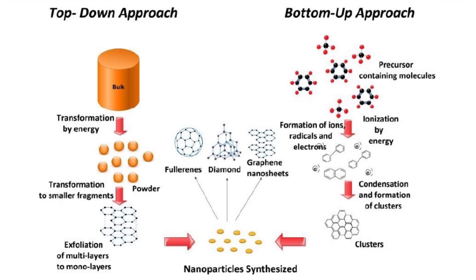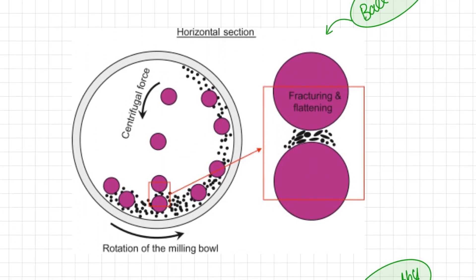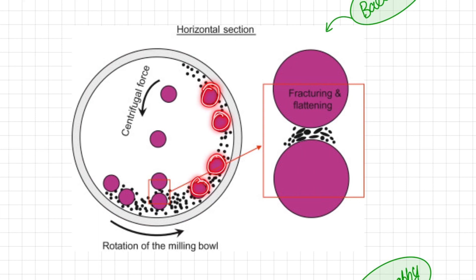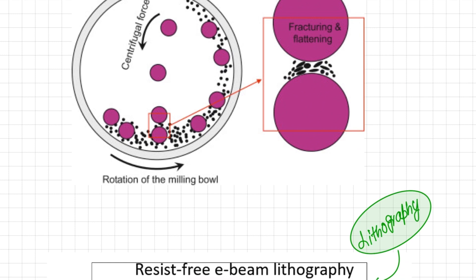Moving to the methods involving the top-down approach, the first is called ball milling. Here there is a large rotating sphere containing heavy balls that rotate in the opposite direction to the outer wheel due to centrifugal force. Particles are crushed by these balls and divided into the nanometer size range. Ball milling is used to convert materials from macro form into nano form and is a very simple method.